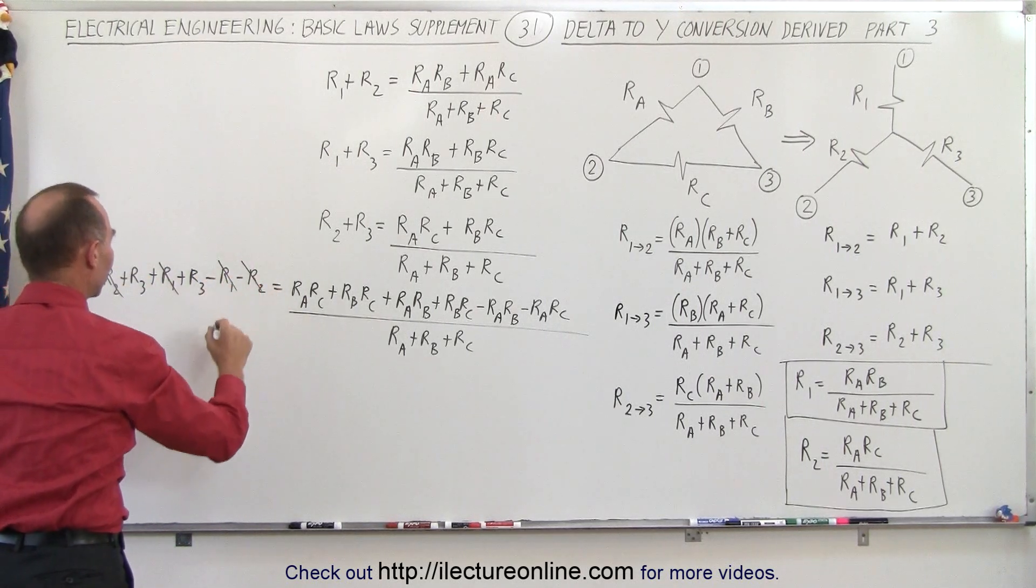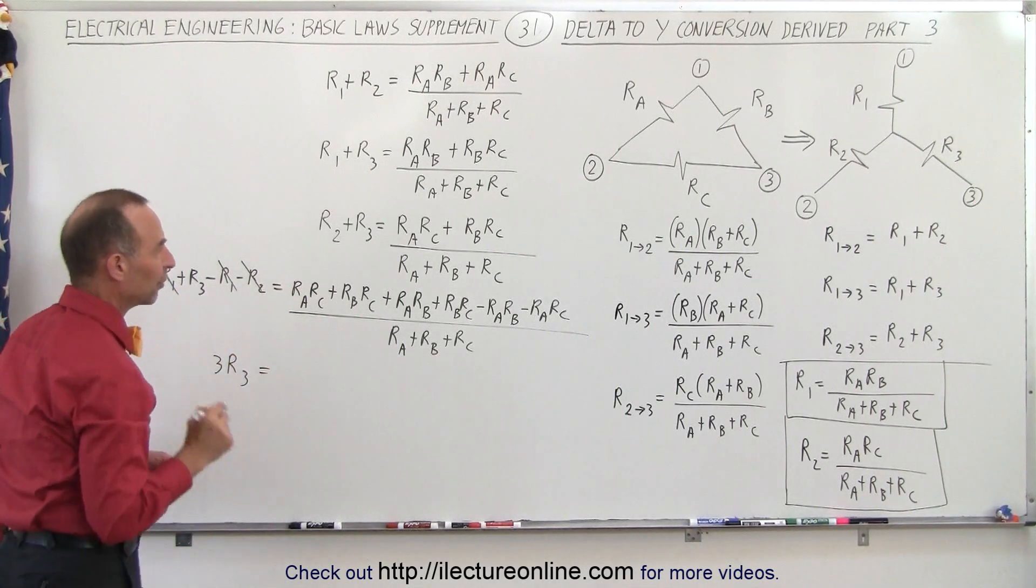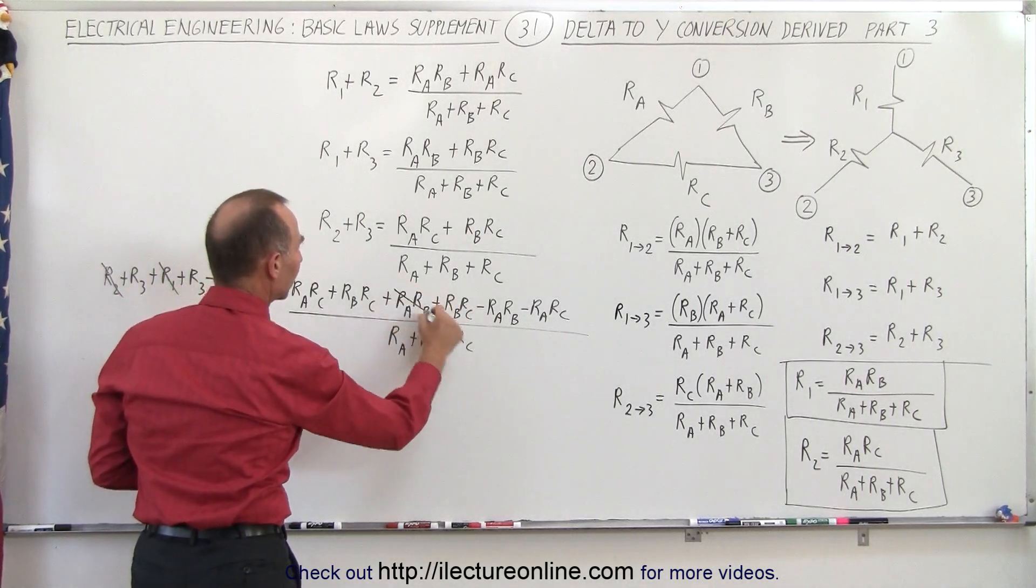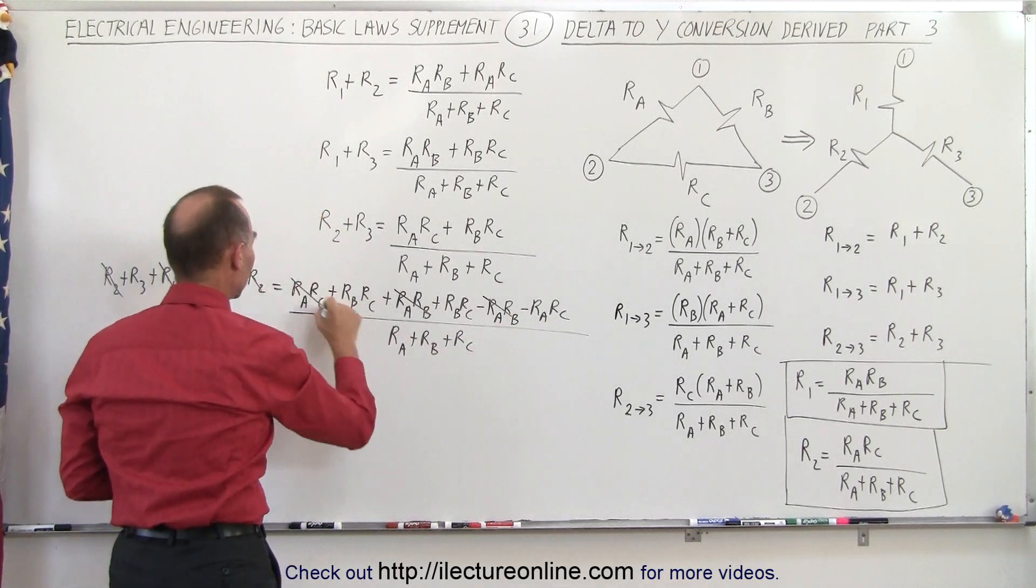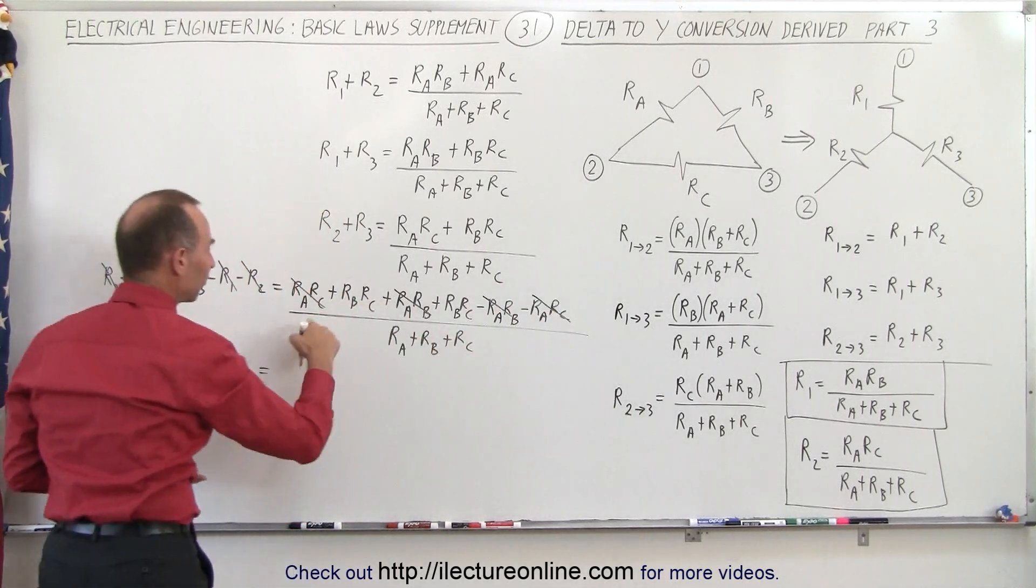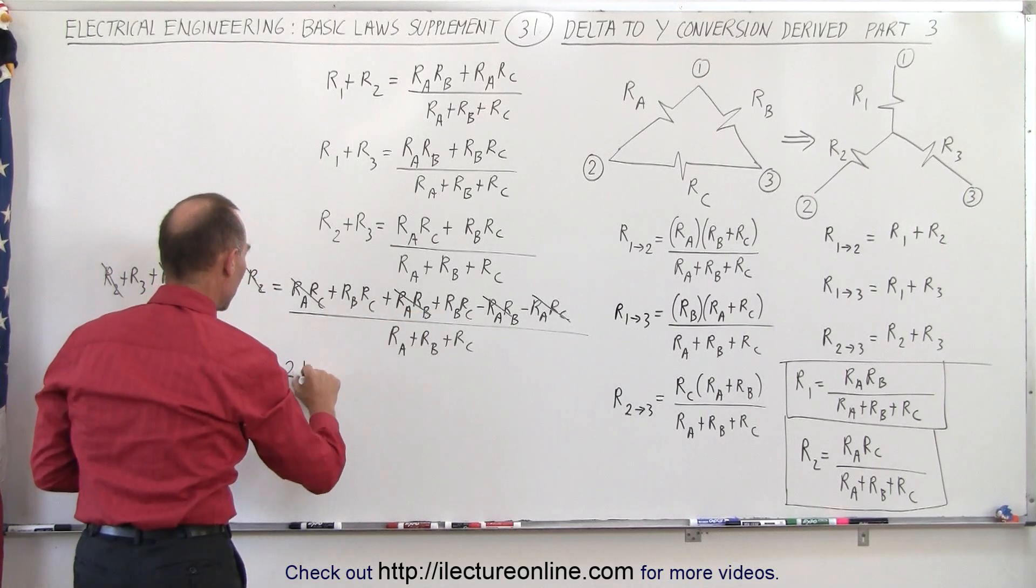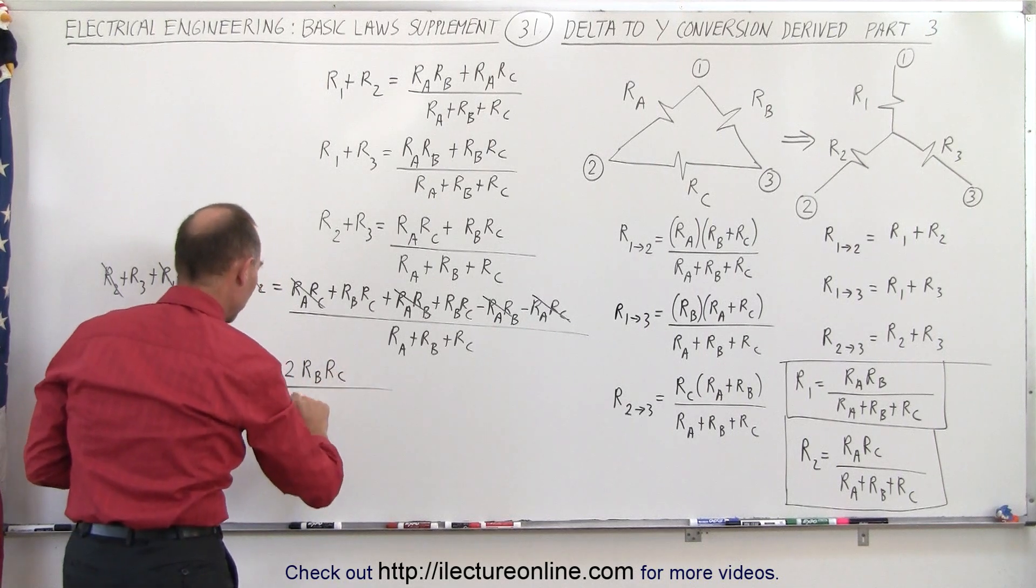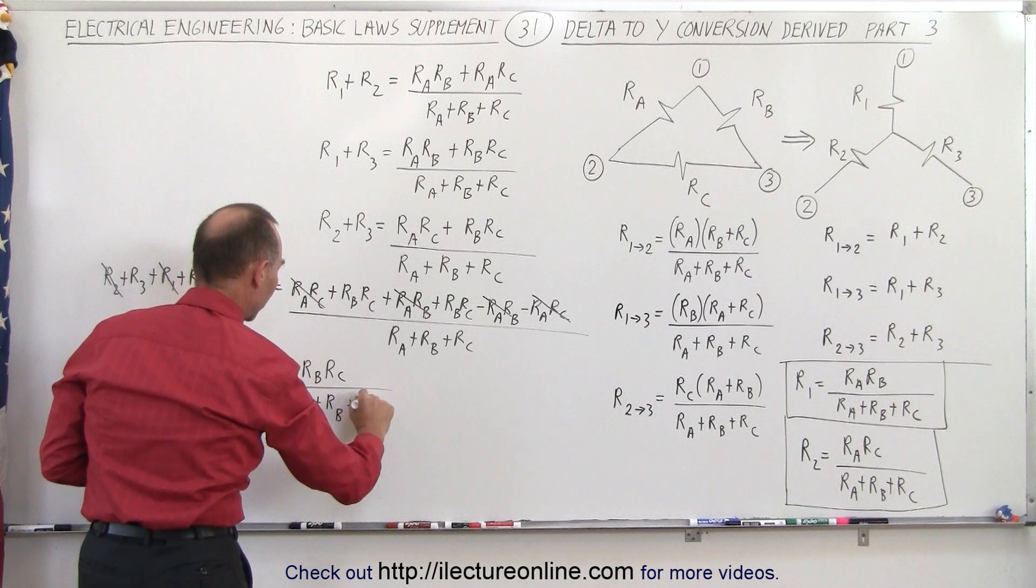So we're left with three times R3 on the left side. On the right side we have RA RB minus RA RB so they'll cancel, we have a minus RA RC and a plus RA RC so those cancel, so we're left with an RB RC plus an RB RC, that's two RB RC divided by the sum of RA plus RB plus RC.